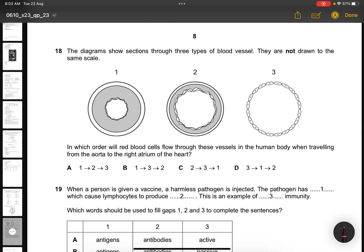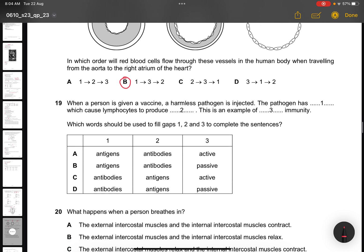Question 18. The diagram shows sections through three types of blood vessel. They are not drawn to the same scale. In which order will red blood cells flow through these vessels in the human body when traveling from the aorta to the right atrium of the heart? It's basically from the left side to the right side of the heart. So first label what is this. This is the arteries, this is the capillaries, and this is the veins. So it has to go from arteries, capillaries, then the veins. So the answer is B. Question 19. When a person is given a vaccine, a harmless pathogen is injected. The pathogen has antigens which cause lymphocytes to produce antibodies. This is an example of active immunity. So the answer is A.